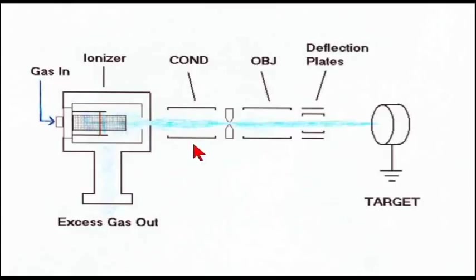As the beam passes the condenser lens, it's squeezed down or expanded or contracted, depending on the voltage that's applied. Same thing with the objective lens. The objective voltage allows you to focus the beam down to a fine point on the target, and the deflection plates raster the beam across the surface.